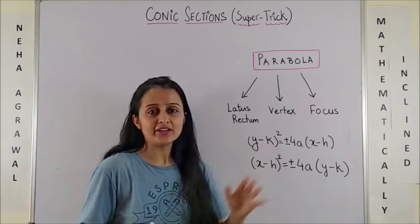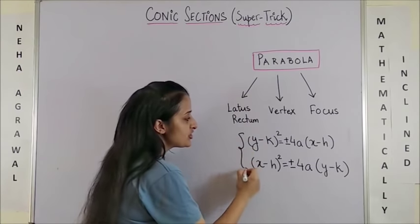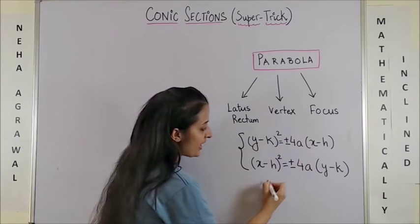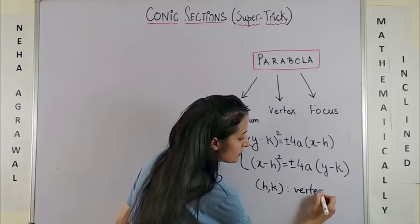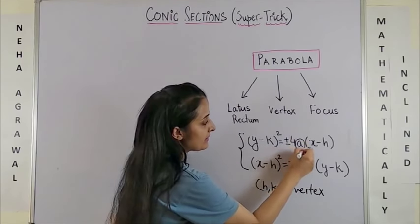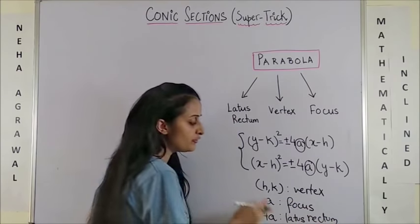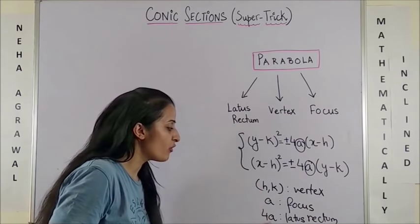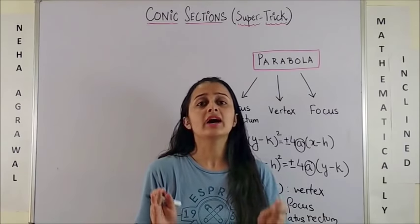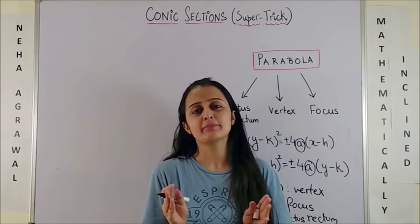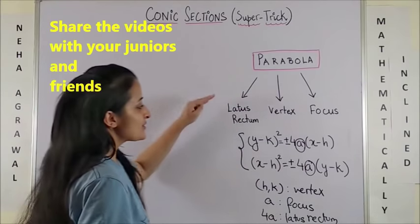To quickly run you through: you are given a parabola. These are the general equations where h and k are the vertex of the parabola. 'a' determines the focus and the length of the latus rectum is four times a. I'm not getting into the full details of a parabola here — if you want a separate video on that, put it in the comment section below.